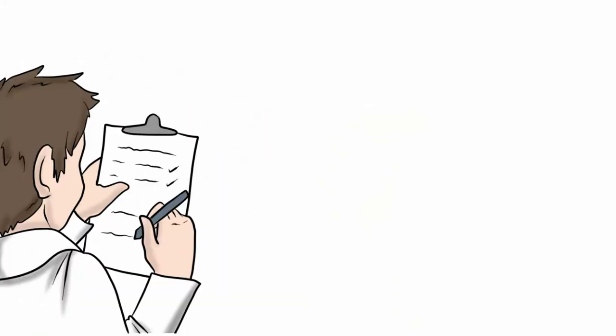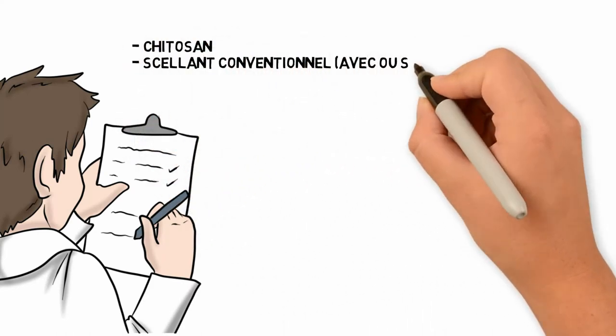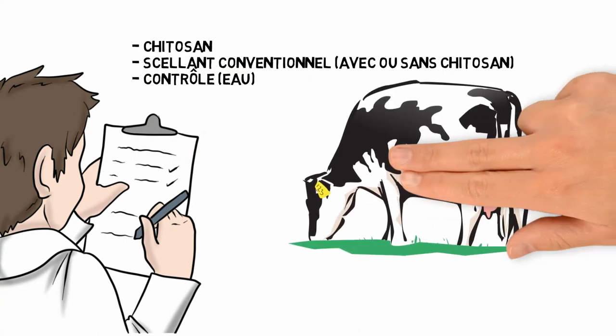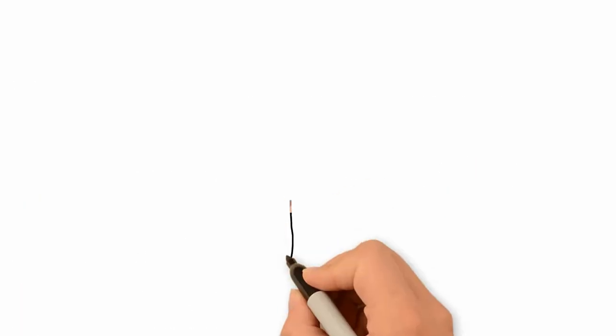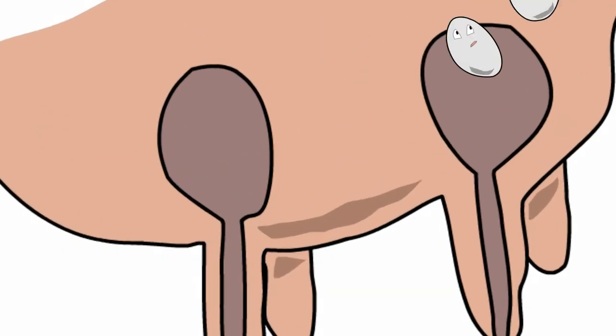By measuring different markers of involution found in milk collected from cows that either received injections of chitosan or a control (in this case water), combined with or without a conventional teat sealant, Samuel observed that chitosan can accelerate the process of involution in the mammary gland while increasing the recruitment of immune cells in the first days of dry-off.